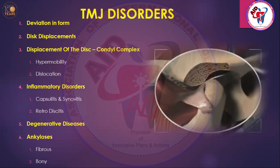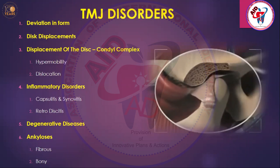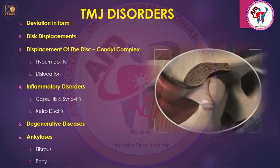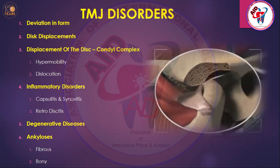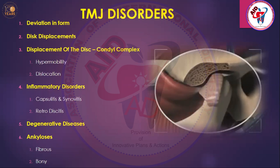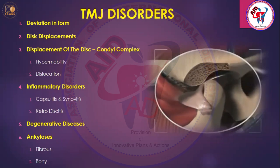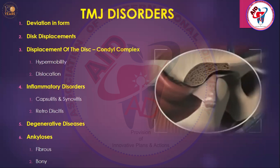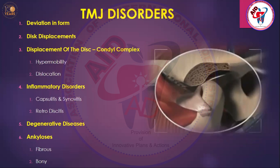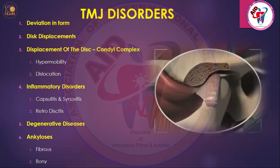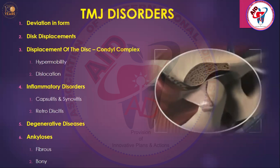The first category is deviation in form — meaning the anatomical structure given by God to the condyle and glenoid fossa has proper orientation, proper shape, and proper physiology, which is very much equal on both sides. If there is any deviation that changes the form of the TMJ, that results in a TMJ disorder. That deviation may be genetically developed, traumatically oriented, or due to any tumor or local growth. The second disorder is disc displacement.